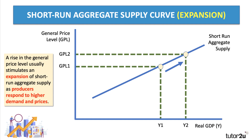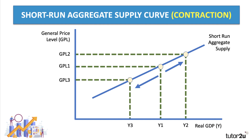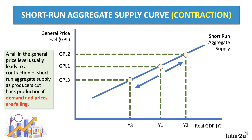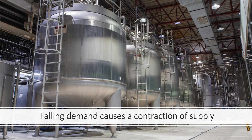A rise in the general price level usually stimulates an expansion of short-run aggregate supply as suppliers and producers respond to higher demand and prices. Equally, supply can contract — it's not always the case that economies expand. Sometimes they go into periods of recession where output is declining. A contraction of short-run supply is usually the result of a fall in the general price level, as producers cut back — particularly when there's been an inward shift of aggregate demand and prices are falling. A fall in the price of milk, for example, might eventually lead to a contraction in the supply of milk.